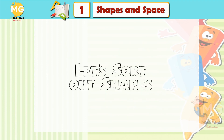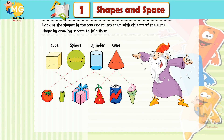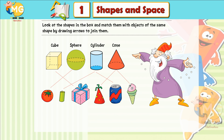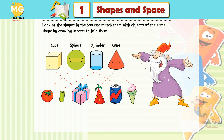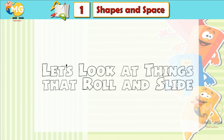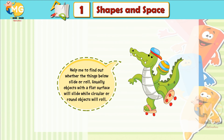Let's sort out shapes. Look at the shapes in the box and match them with objects of the same shape by drawing arrows to join them: cube, sphere, cylinder, cone.